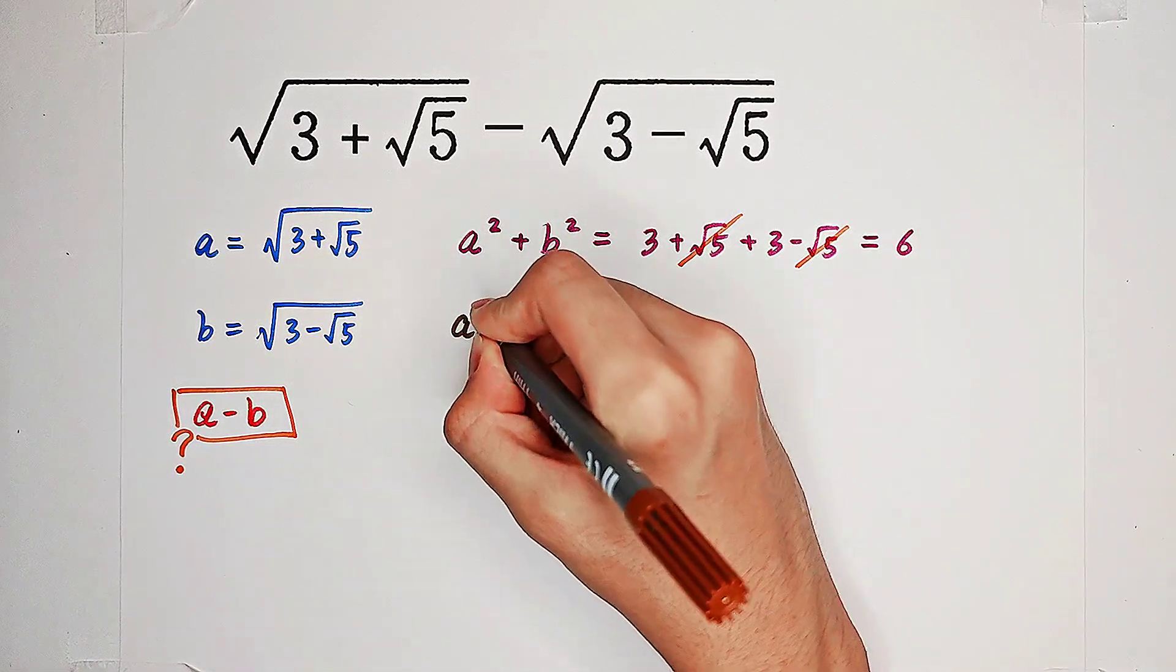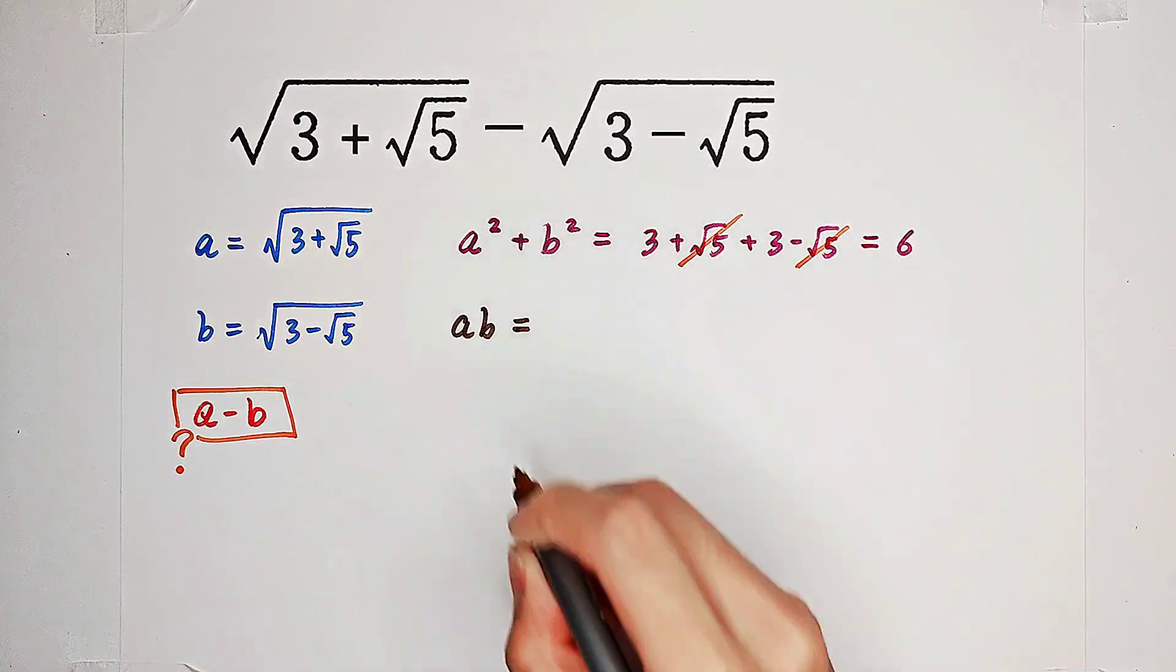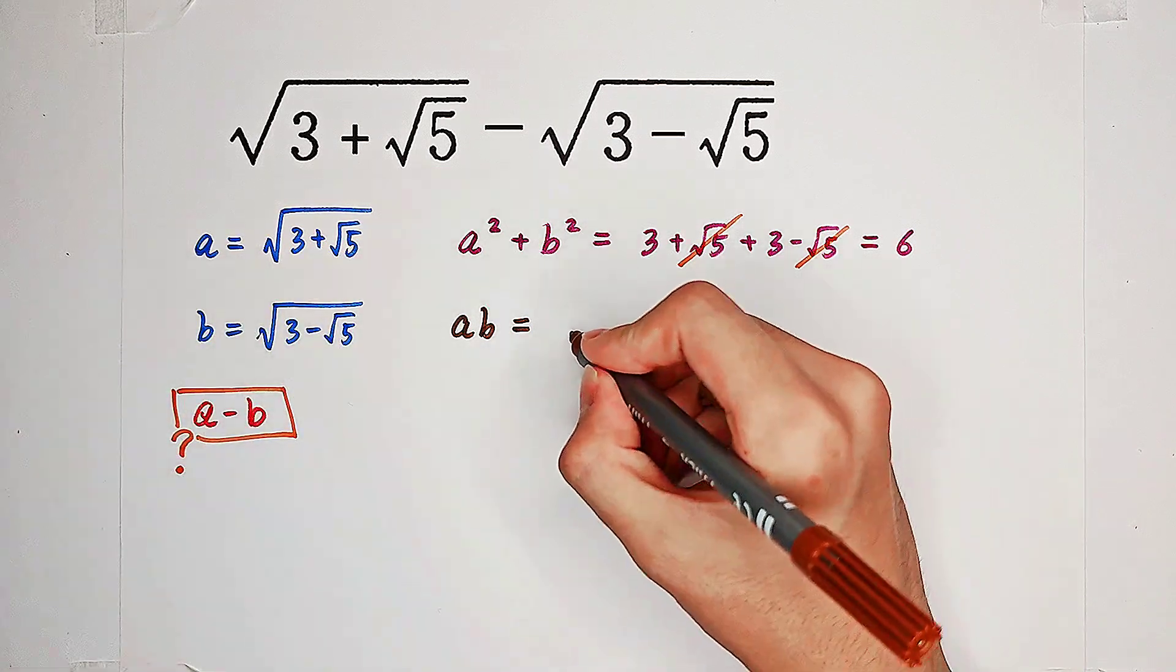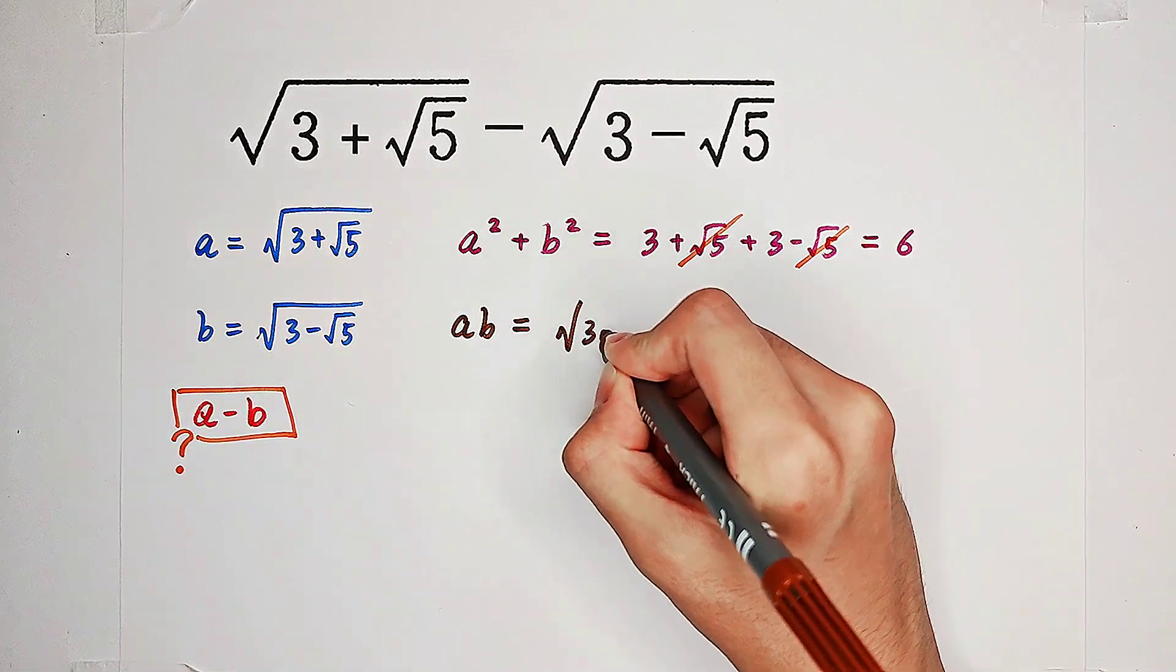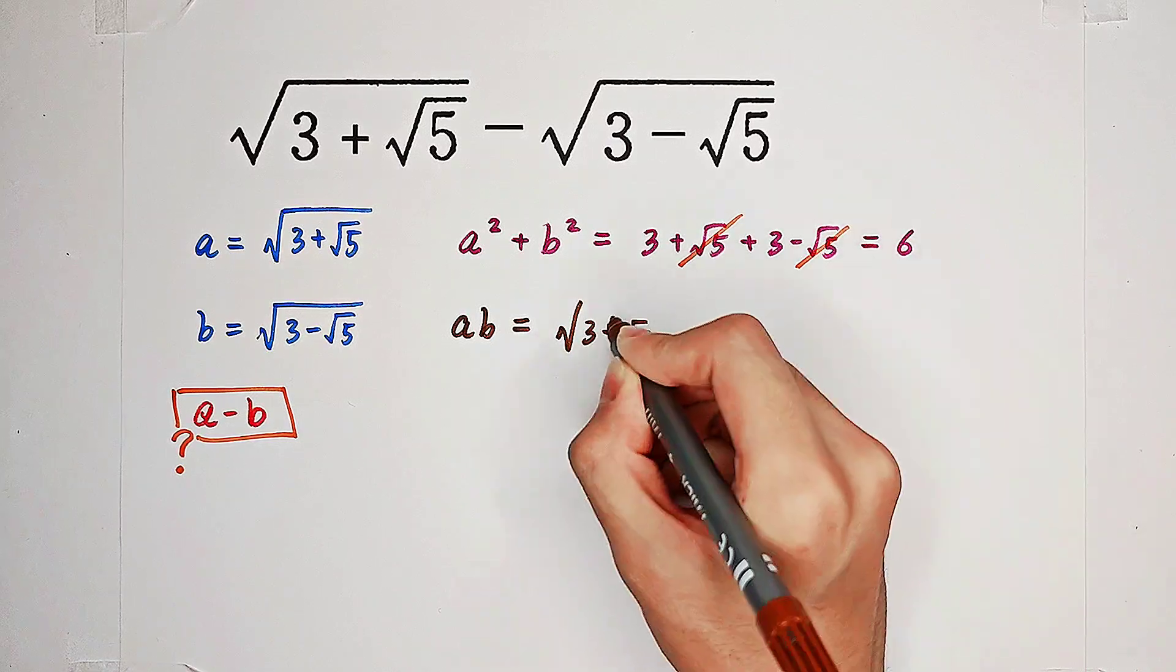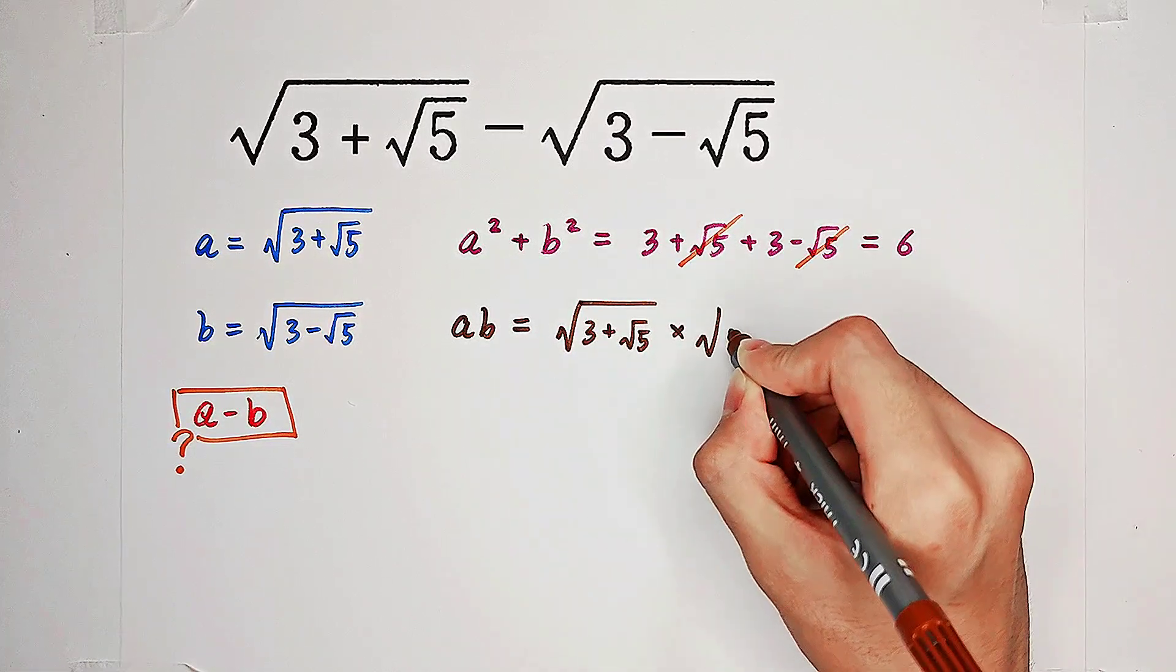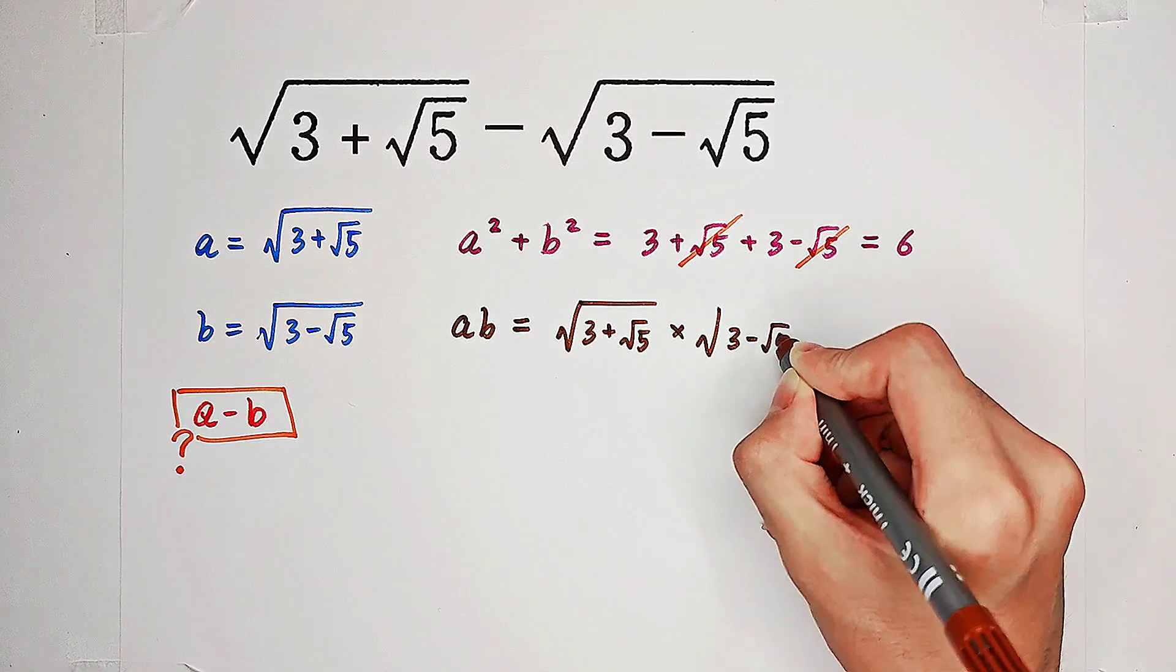Then, let's have a look at the product, a times b. A little bit complicated. a times b is square root of 3 plus square root of 5 times square root of 3 minus square root of 5.